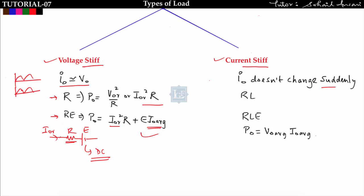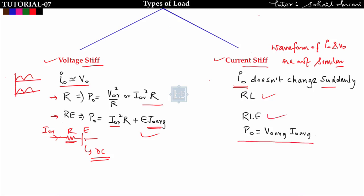In current stiff type of load, the waveforms of i_naught and v_naught are not similar, and i_naught does not follow a sine wave, so we cannot easily calculate RMS current. For RL and RLE type loads, always calculate output power using average voltage and average current: output power = V_naught_average × I_naught_average. Remember: voltage stiff loads use RMS values; current stiff loads use average values.